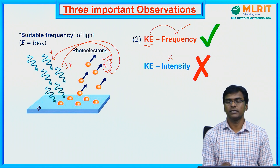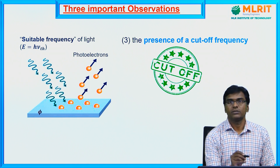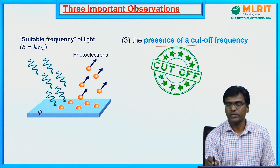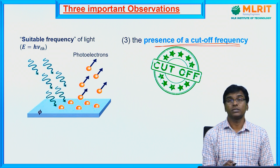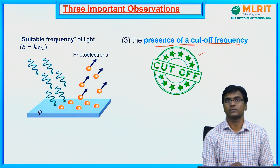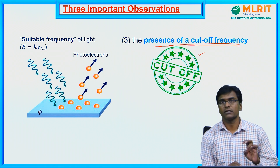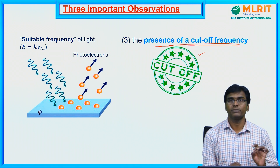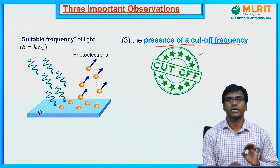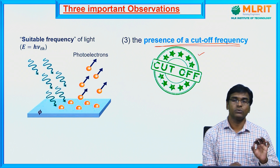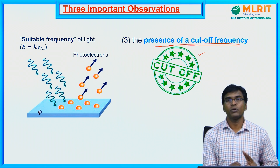The third important observation is that only suitable frequencies show the photoelectric effect — there is a cutoff frequency. With all frequencies of light, we cannot see the photoelectric effect; only certain suitable frequencies show it. So these are the three main observations: no time lag, kinetic energy depends on frequency not intensity, and there is a cutoff frequency below which the photoelectric effect does not occur.